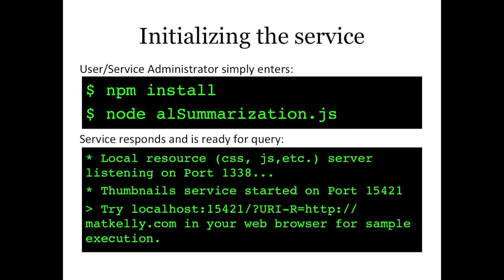To install the service: first install Node on your PC or server. Run npm install to install all dependencies, then simply type node alsummarization and the service is up and running. The output tells you what host and port to go to in your web browser — or where to curl — to interface with the service. For example, if you installed it on localhost to show it, you'd go to that URI in the browser.